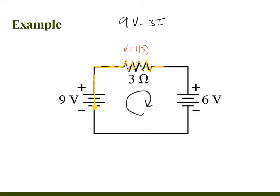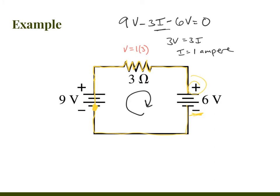Continuing around the loop, we get to another battery, but we're going through it backwards — from positive to negative terminal — so voltage drops another 6 volts. That covers the whole circuit, and Kirchhoff's loop rule says the total must equal zero. Solving: 9 volts minus 6 volts gives 3 volts equals 3I, so current I equals 1 ampere through the whole circuit. This result is not obvious when you've got two batteries.